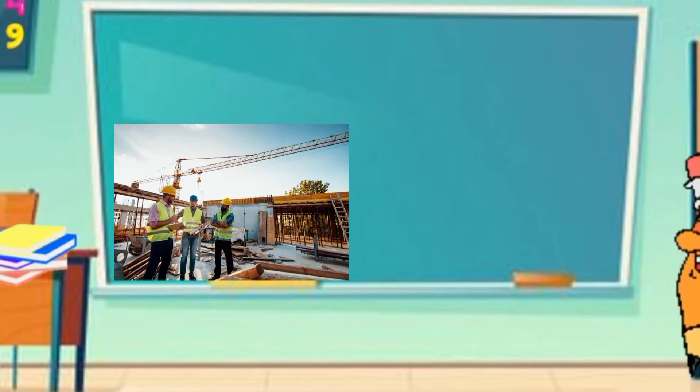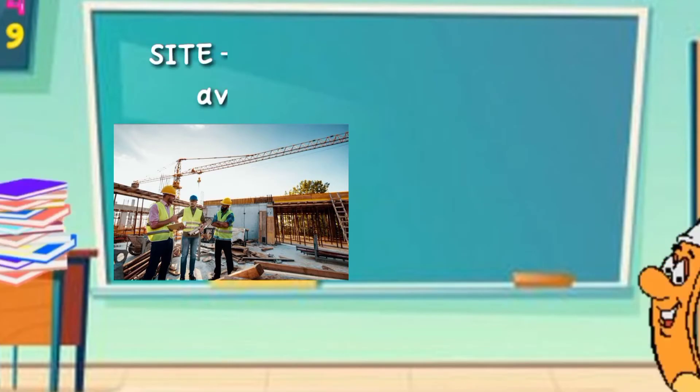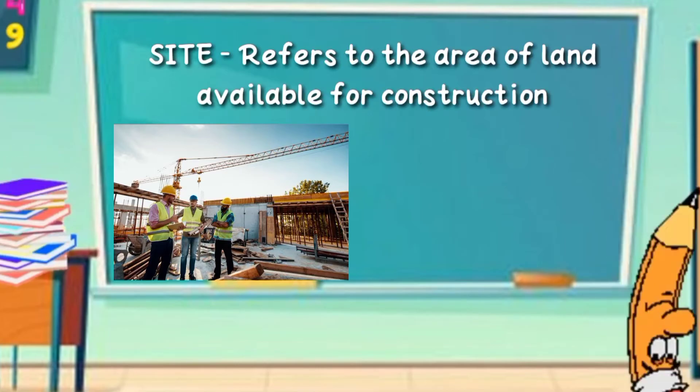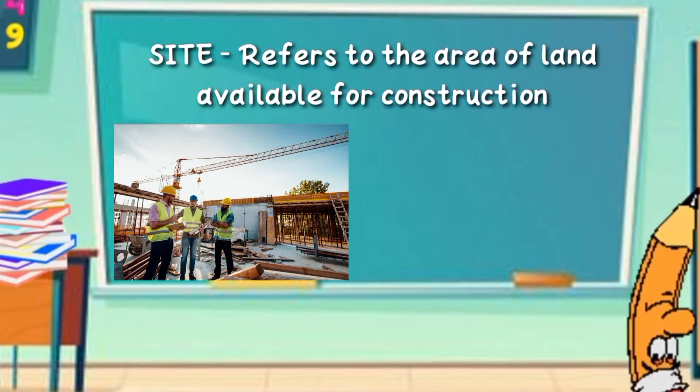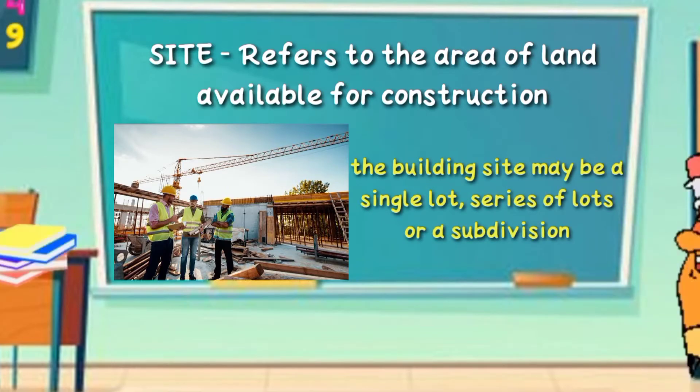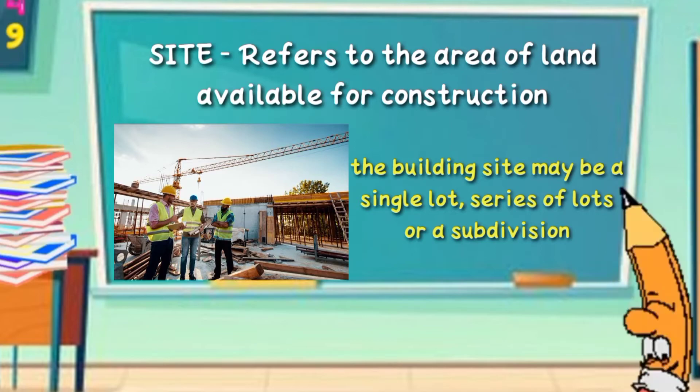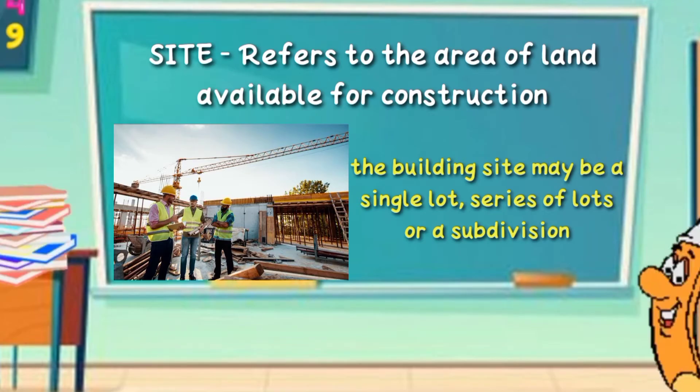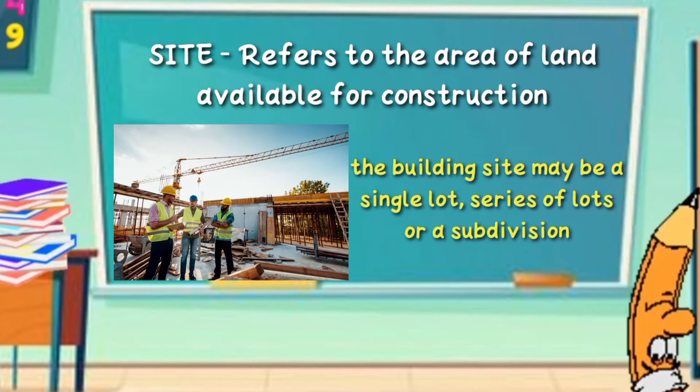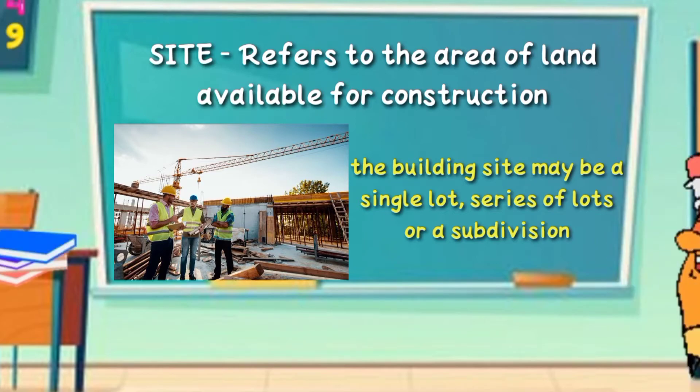The following are the terminologies used in discussing matters about Site Development Plan. The first one, Site. It refers to the area of land available for construction or the lot on which a building is constructed. The building site may be a single lot, a series of lots, or a subdivision.